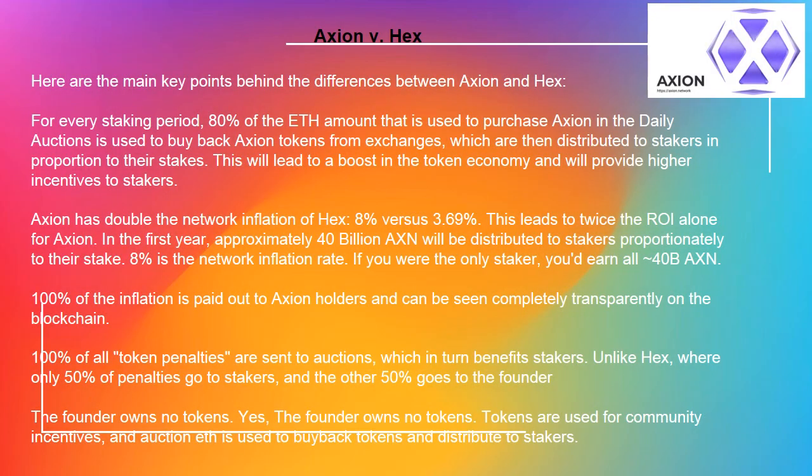Axion vs HEX. Here are the main key points behind the differences between Axion and HEX. For every staking period, 80% of the ETH amount that is used to purchase Axion in the daily auctions is used to buy back Axion tokens from exchanges, which are then distributed to stakers in proportion to their stakes. This will lead to a boost in the token economy and will provide higher incentives to stakers.